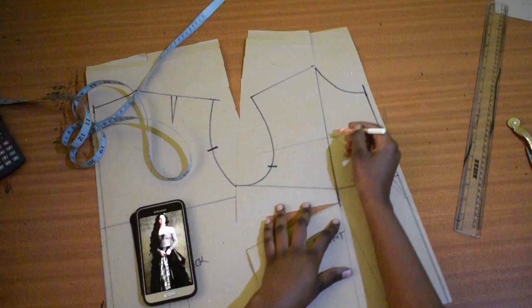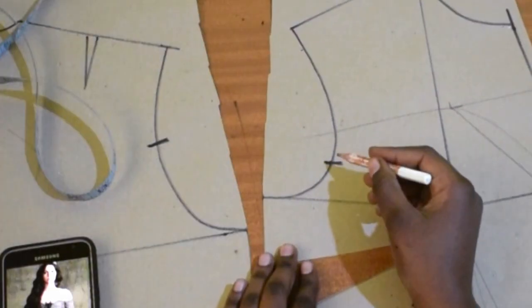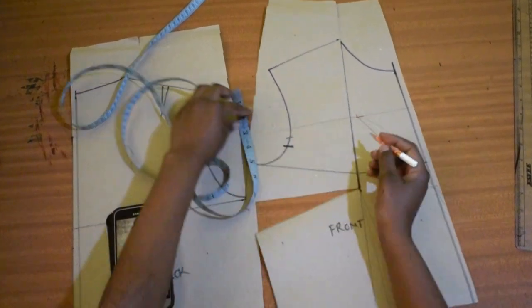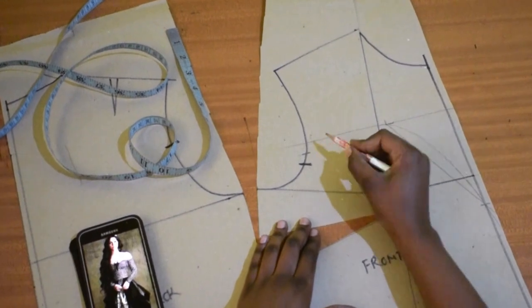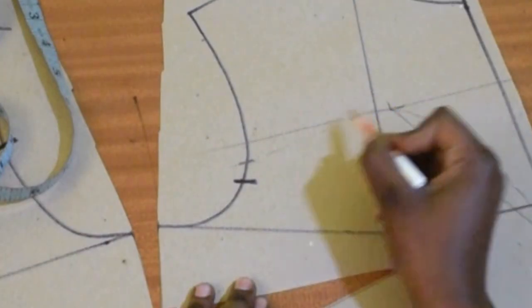Just assume I have a curve ruler. And then do the same, draw a straight line first and then curve it. Curve it like that. Half an inch. And then join with a curve again from this point like that.